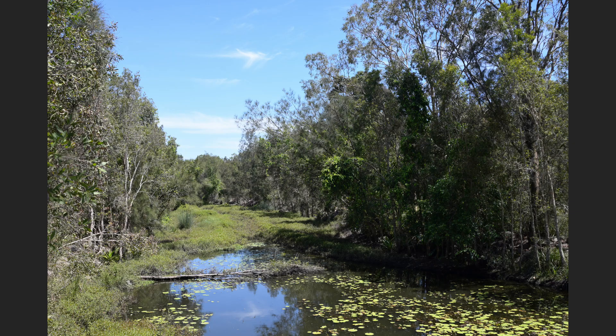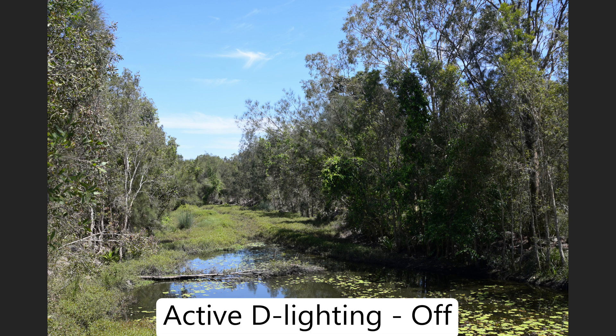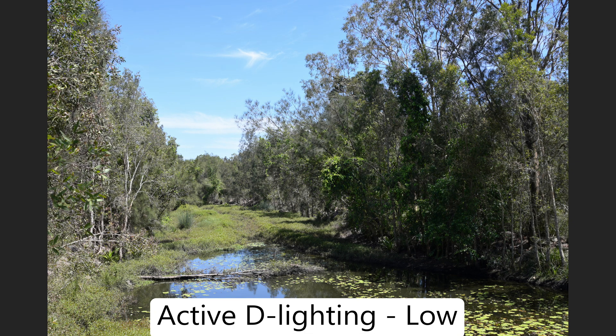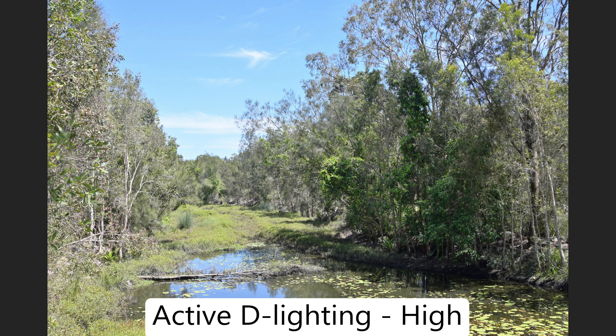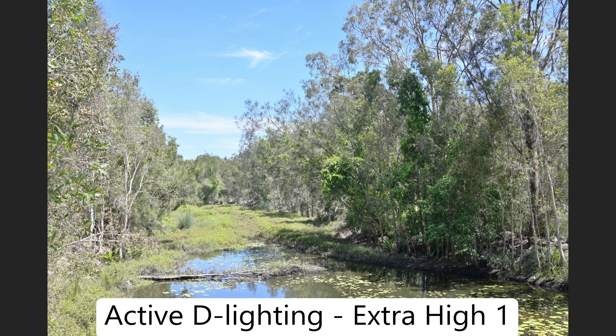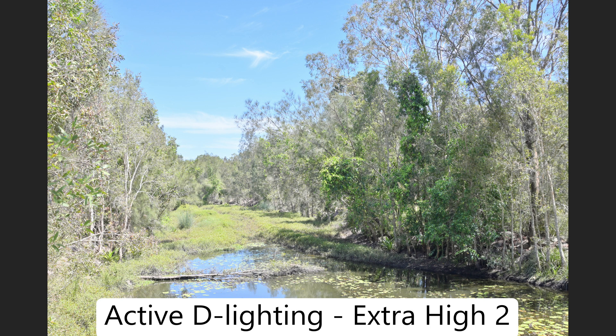This is a fairly plain image — concentrate on the very dark area of greenery on the right-hand side. Active D Lighting here is off. Now it's set to low. Now set to medium — can you see how the shadows are starting to lighten up a bit, but the highlights aren't changing too much? This is set to high. The next one is set to extra high, and the next one is set to extra high 2.